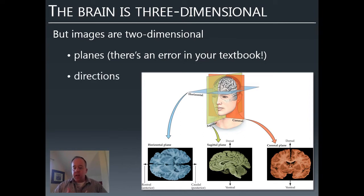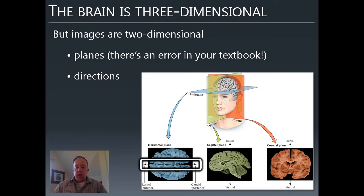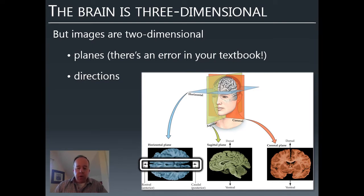In addition to planes, we can refer to directions and relative locations. Anterior means toward the front; posterior means toward the back—the front of the face and back of the head. You'll also see the terms rostral and caudal—caudal again meaning toward the tail, a holdover from animal literature. Dorsal and ventral: dorsal, if you've heard of a dorsal fin, is on the animal's back. For humans, dorsal means toward the top of the head, and ventral toward the feet—because our brains are rotated 90 degrees relative to most animals.